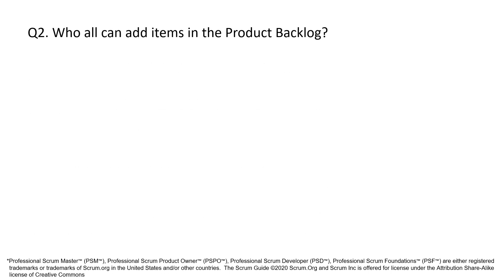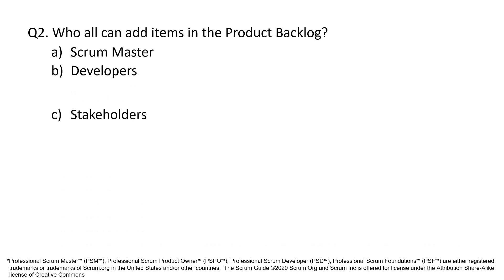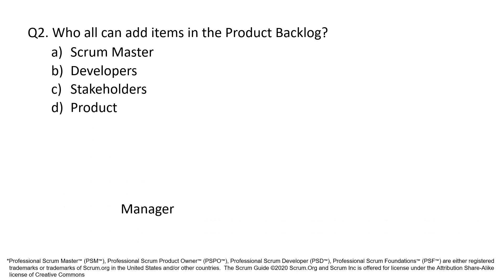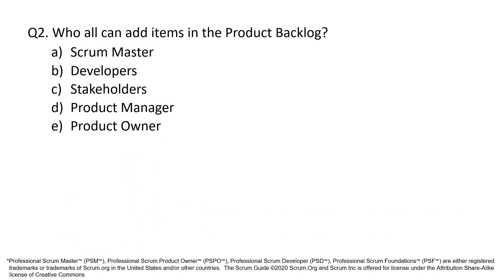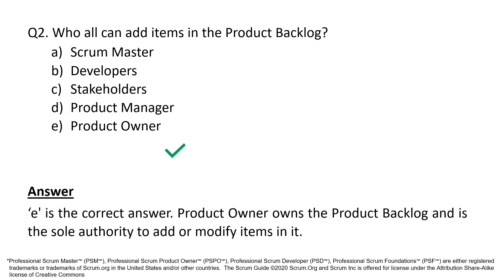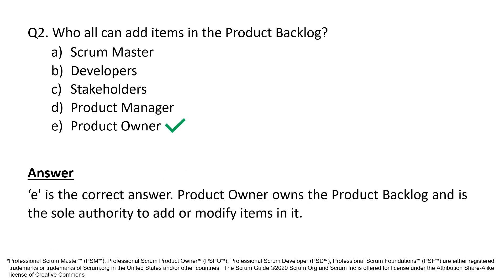Question 2. Who all can add items in the Product Backlog? A. Scrum Master. B. Developers. C. Stakeholders. D. Product Manager. E. Product Owner. E is the correct answer.